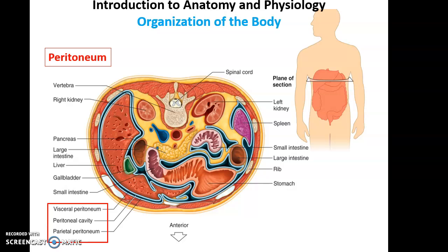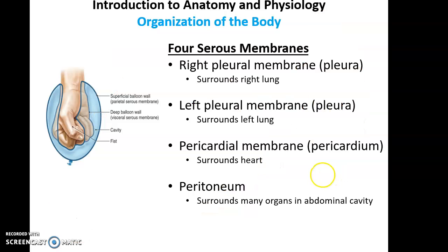The peritoneum is very important. Like all the serous membranes, they are important because they reduce friction. Our lungs are always expanding and contracting, our heart is always beating, and many of our digestive organs are always moving around. These movements generate friction, so serous membranes reduce the friction that organs are exposed to, helping to protect them. Additionally, the peritoneum has a function of helping attach abdominal organs to each other and to the abdominal wall.